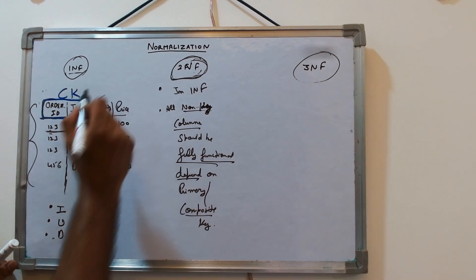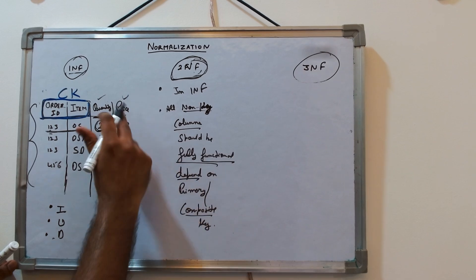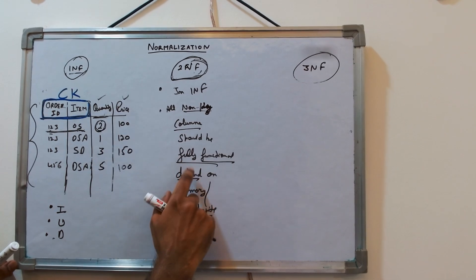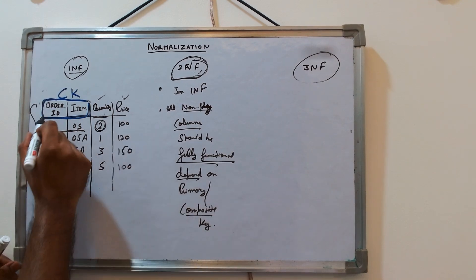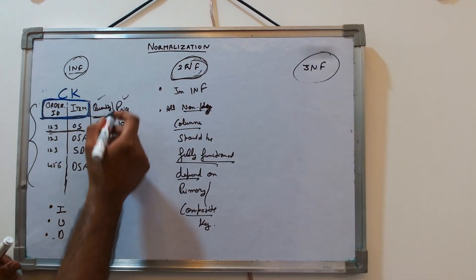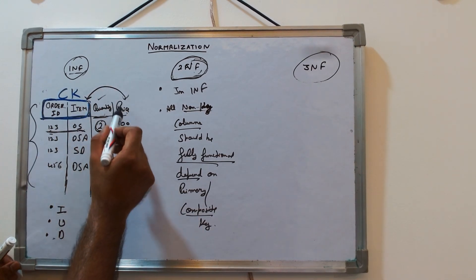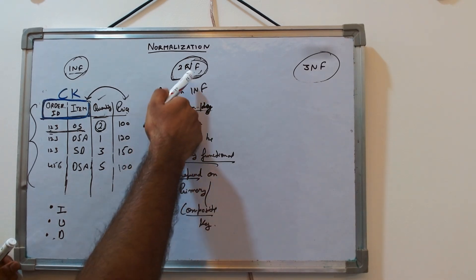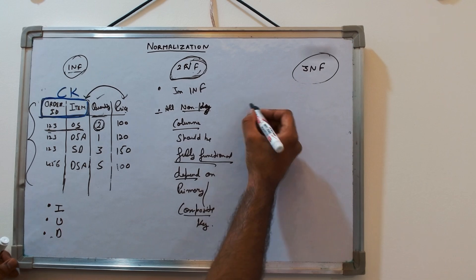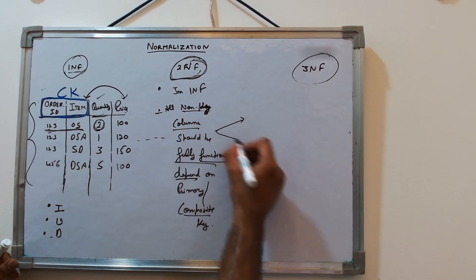So that's okay, quantity is okay. It is fulfilling this one. Is price fulfilling this fully functional property? Is this price dependent on both the columns of the composite key? No, price is only dependent on item. So this column is not fulfilling this property, and hence it is breaking the 2NF. So to fix this, we can divide it.